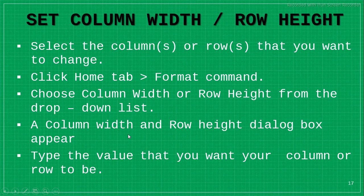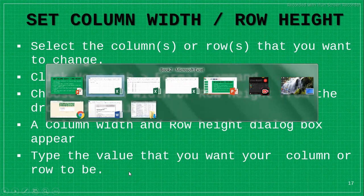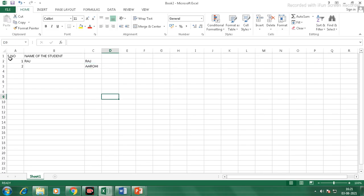To change column width or row height, select the column you want to change, click on the Home tab, then the Format command, and from the drop-down list choose Column Width or Row Height. The dialog box will appear — type the value you want and click OK.